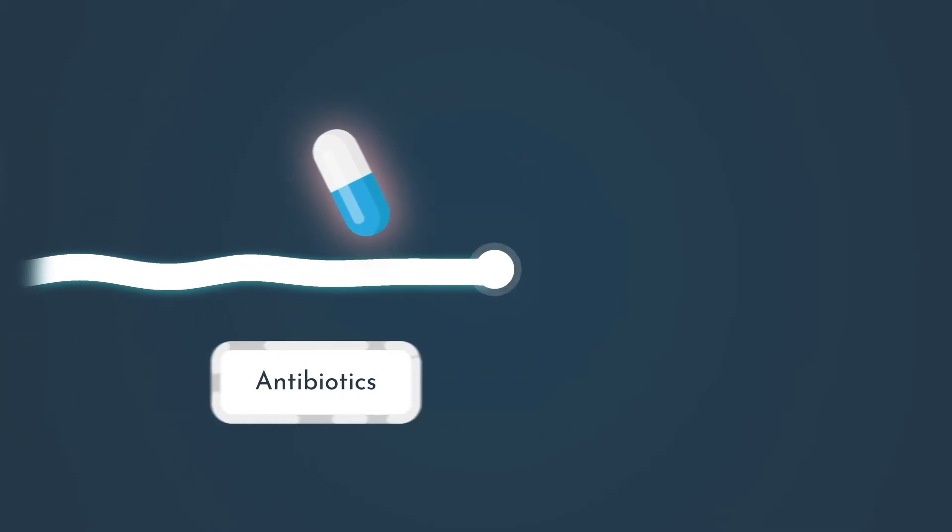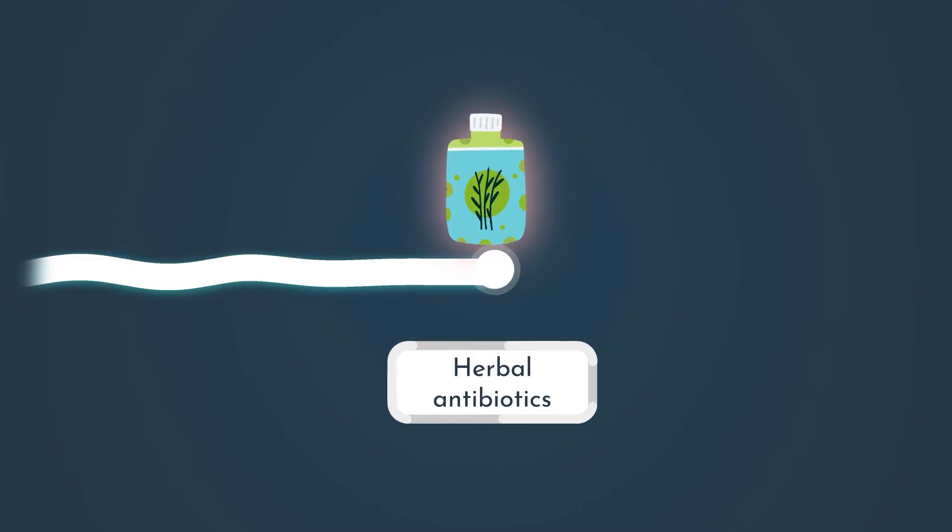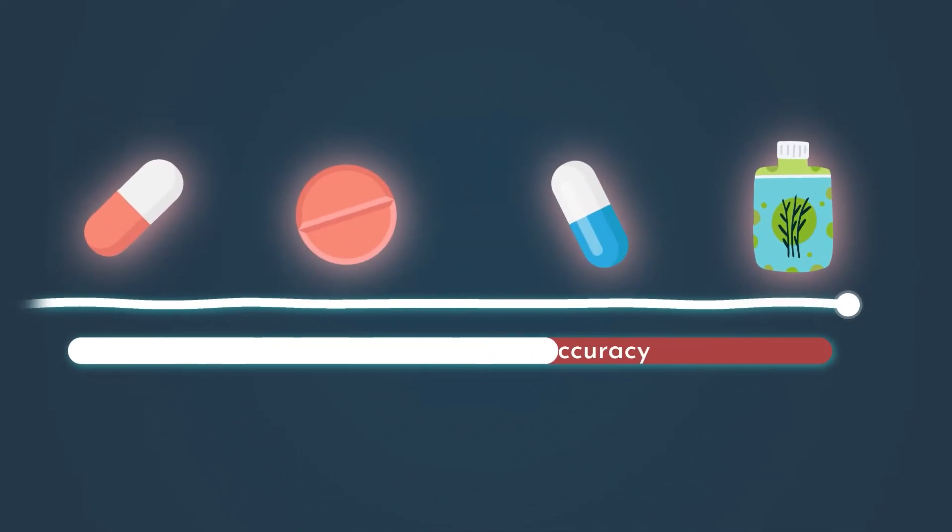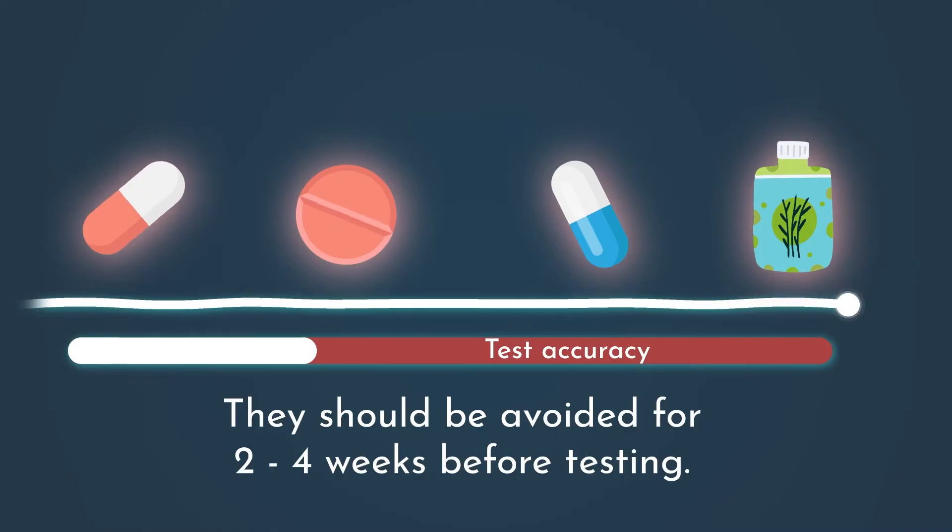However, medications like proton pump inhibitors, bismuth, antibiotics, and herbal antibiotics can affect the test's accuracy, so they should be avoided for two to four weeks before testing.